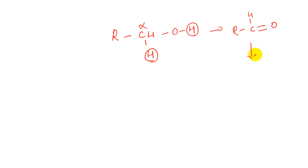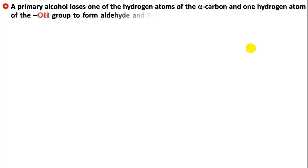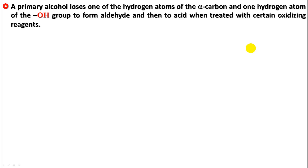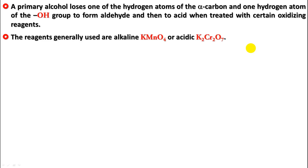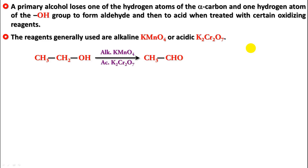The aldehyde further gets oxidized: this H goes away, OH comes in its place, and we get a carboxylic acid. A primary alcohol loses one hydrogen from the alpha carbon and one from the OH to form the aldehyde, which then gets oxidized to the acid. For this, we generally use alkaline KMnO4 and acidified dichromate — you can use either one. You first get an aldehyde, which gets further oxidized to give a carboxylic acid.